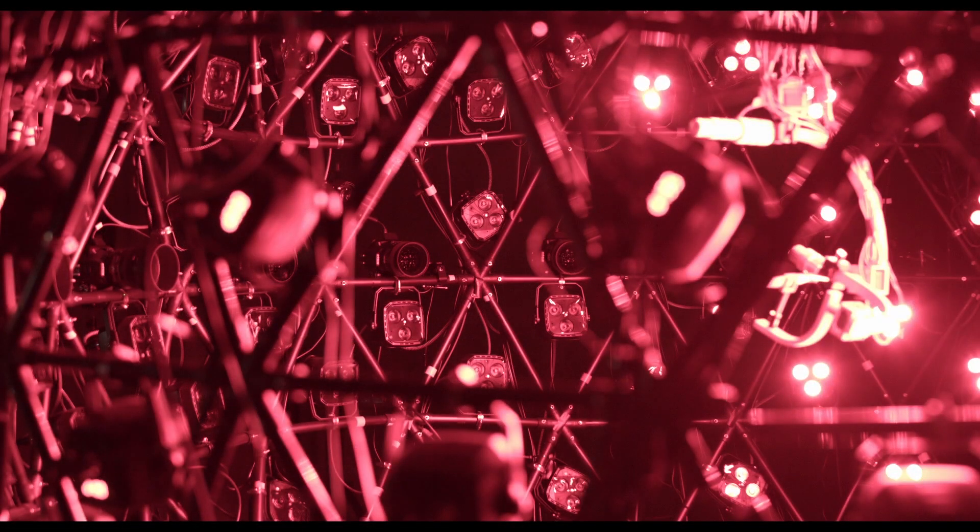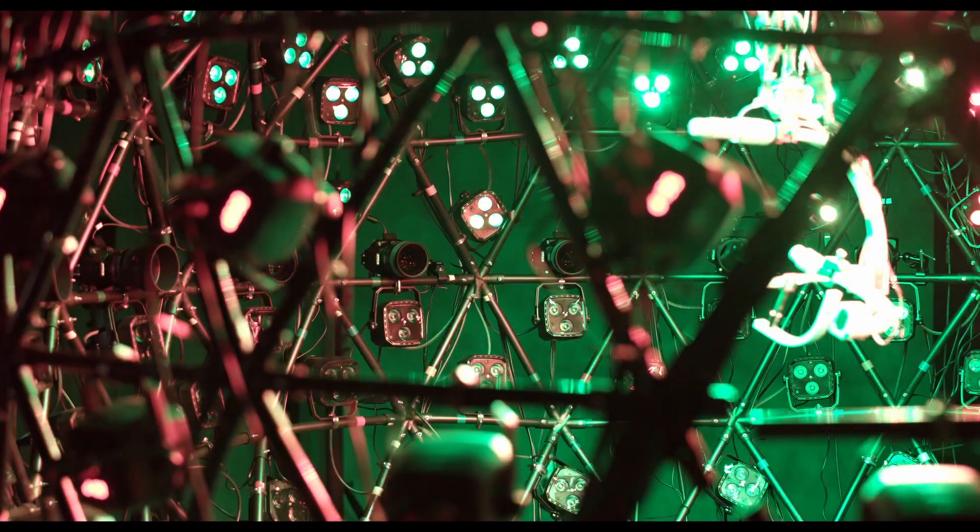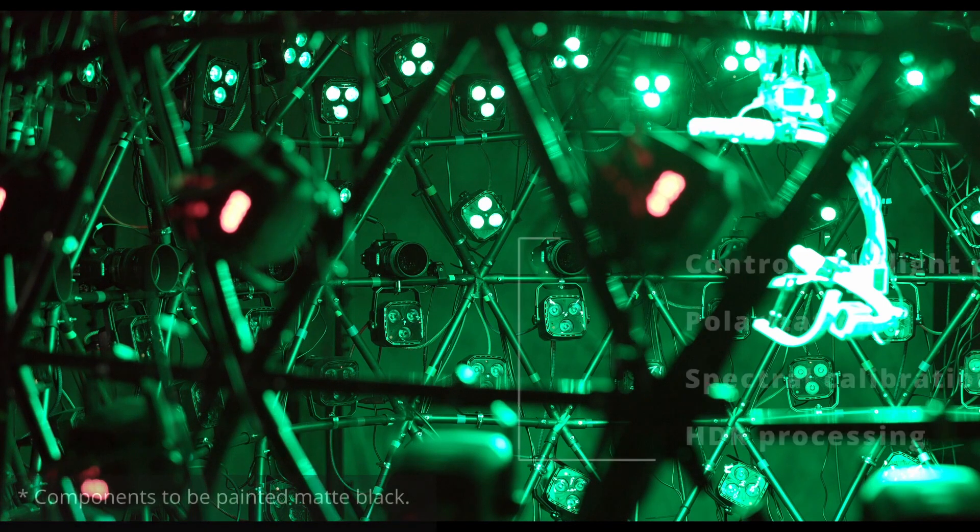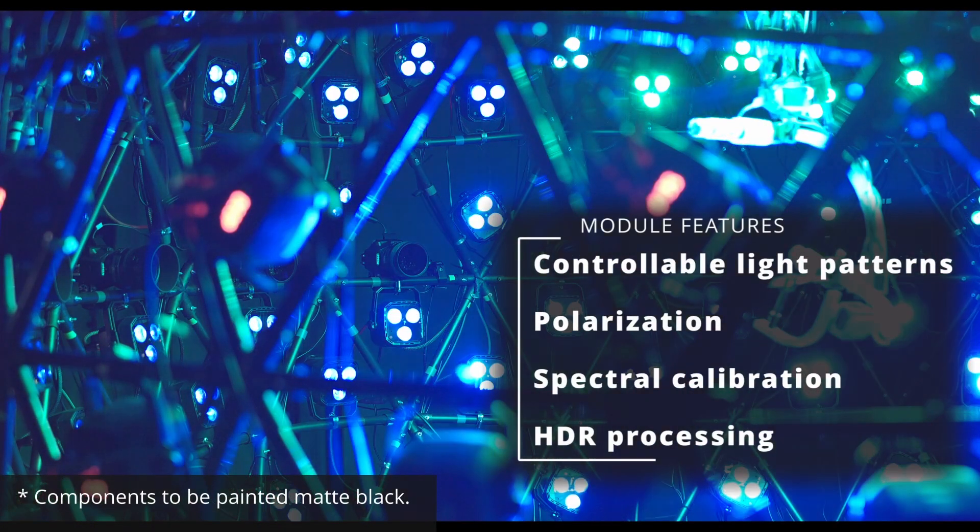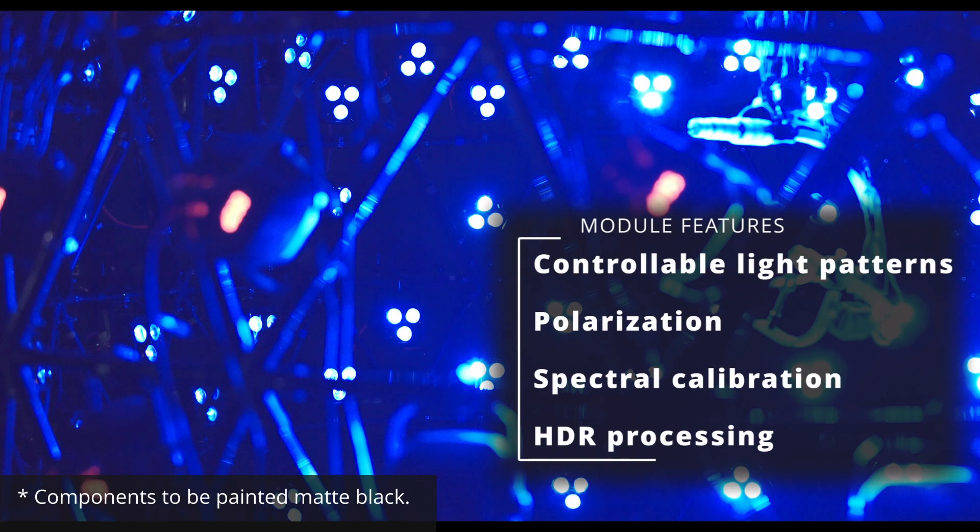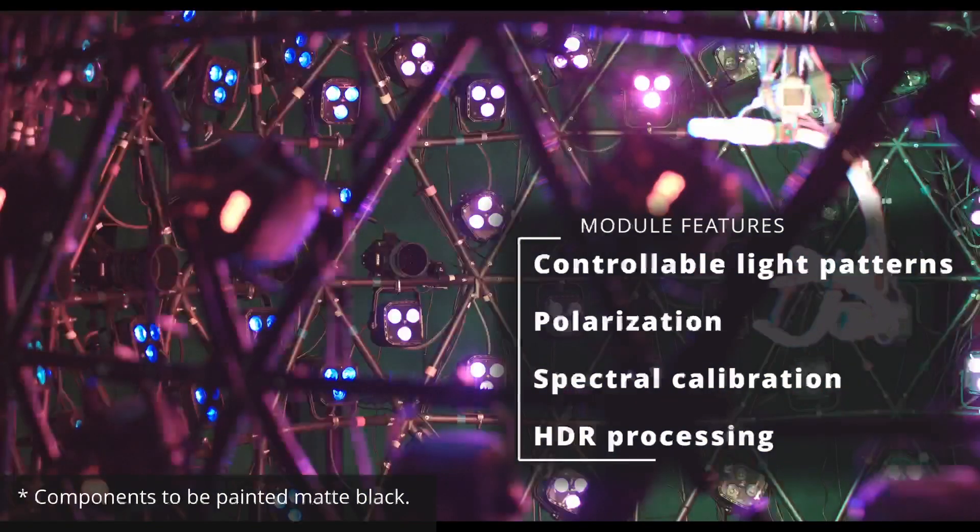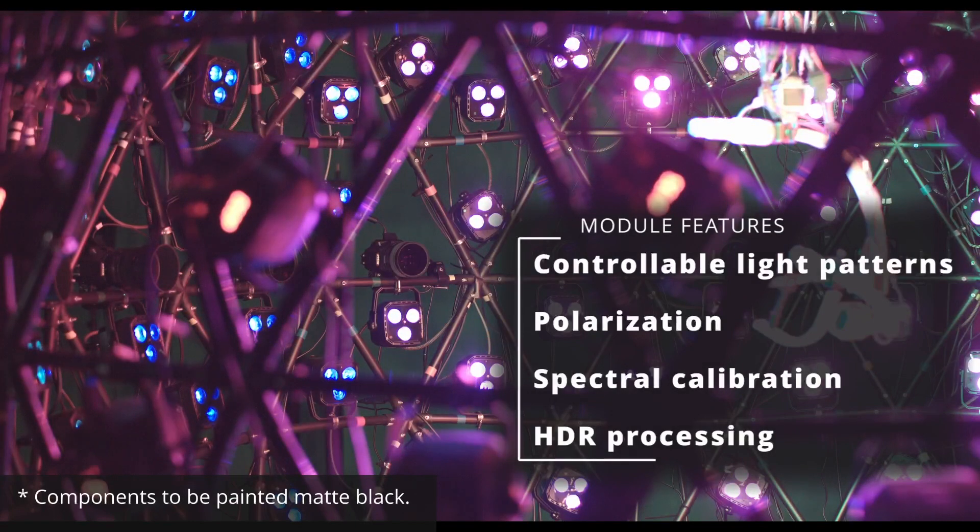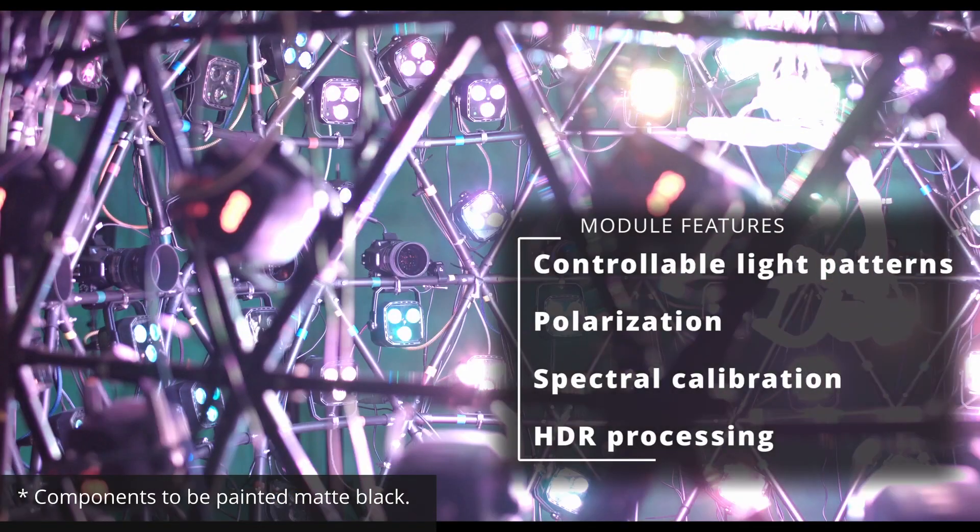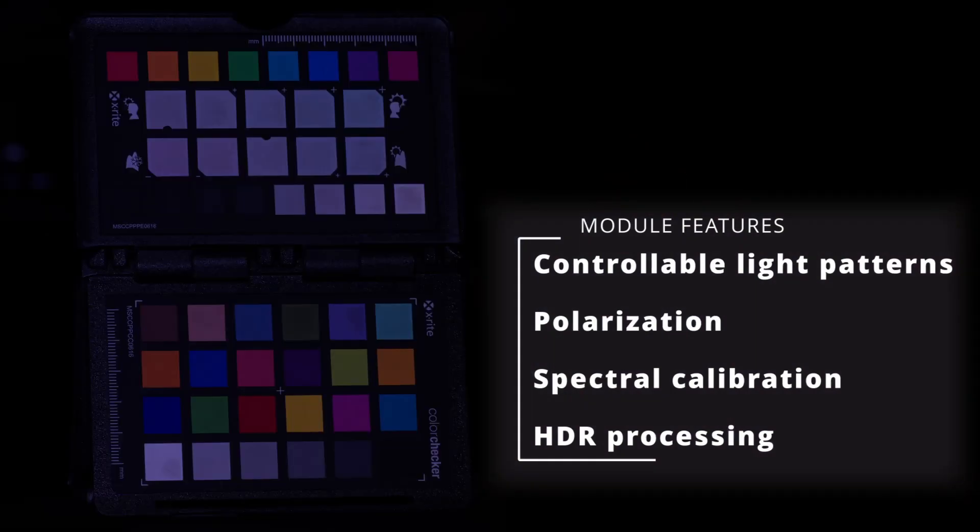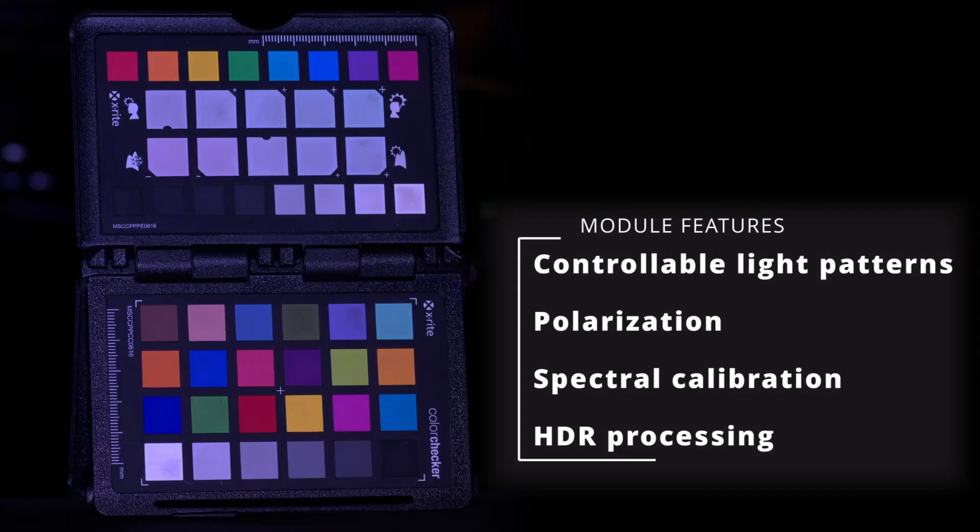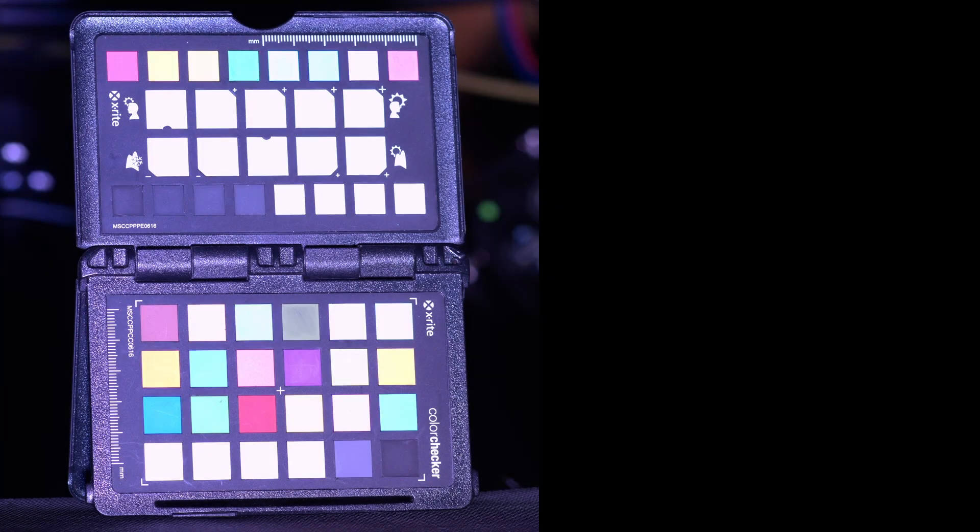Some key aspects of the lighting and camera modules are as follows. The lights are highly controllable through code, enabling pattern and environment illumination. There are polarizing filters for acquiring estimates of diffuse and specular responses. The recorded images and lights are spectrally calibrated. And each capture is raw, exposure bracketed, and processed as a high dynamic range, or HDR, image.